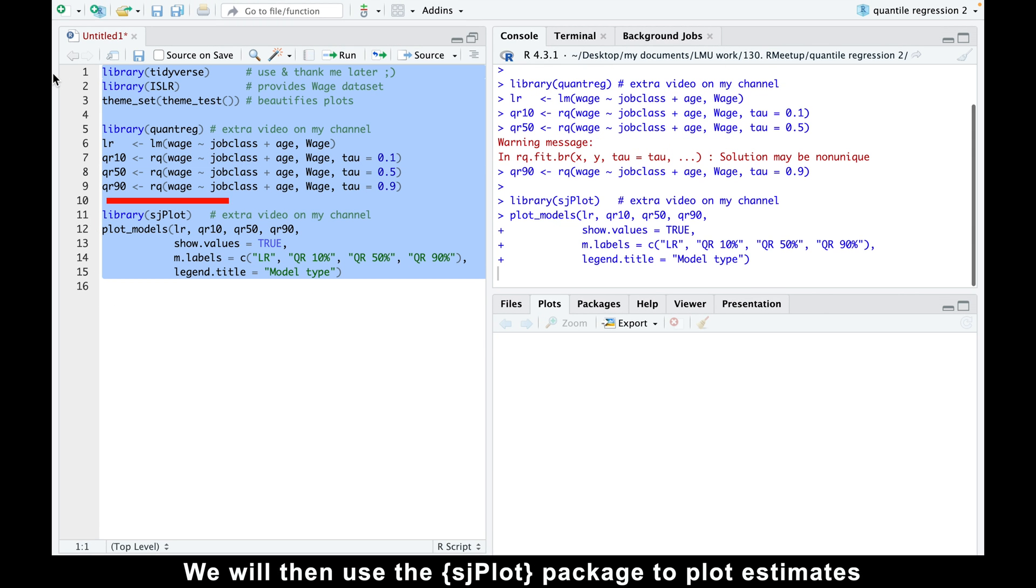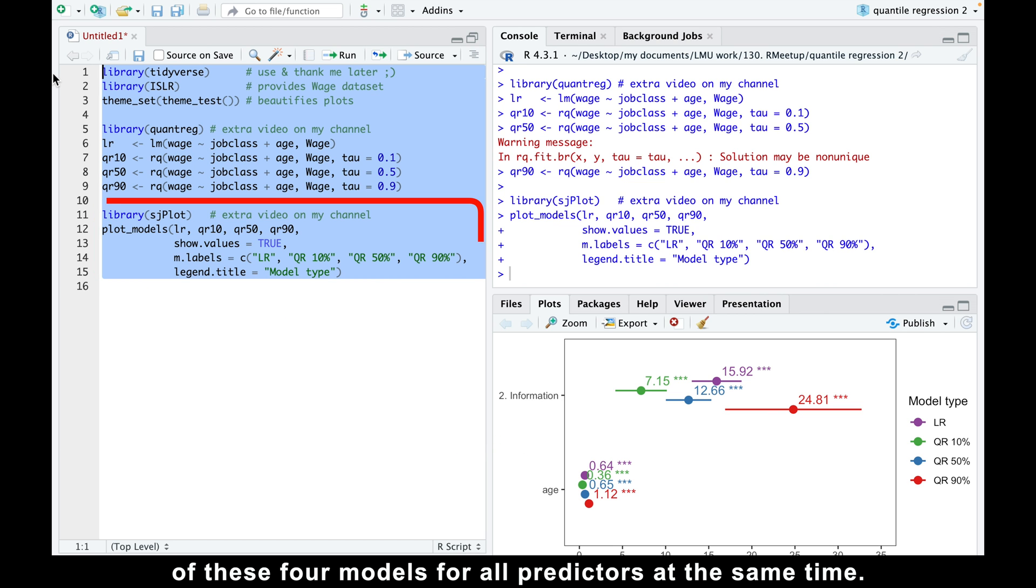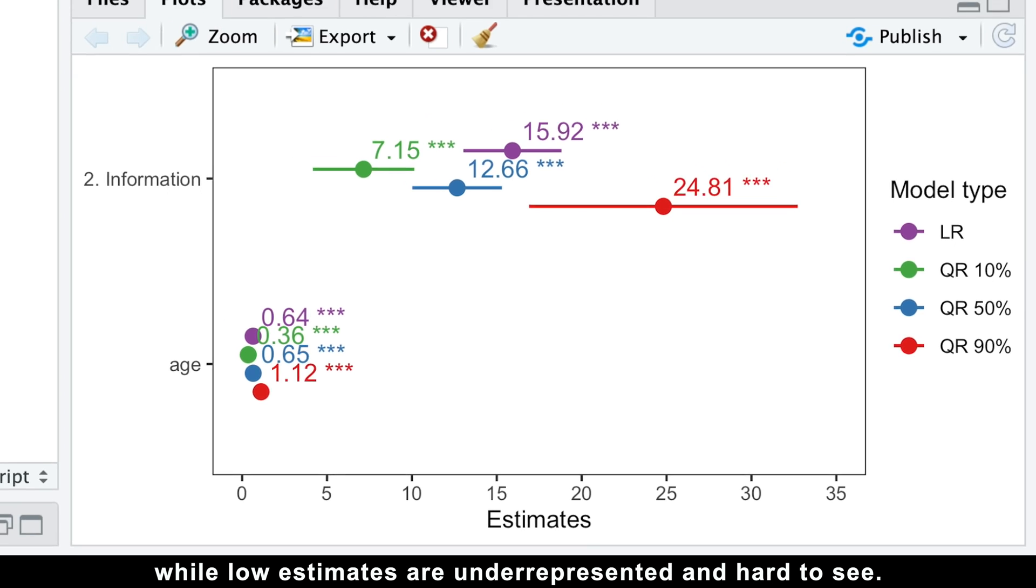We will then use the SJPlot package to plot estimates of these four models for all predictors at the same time. While this plot allows us to compare results among models, different predictors usually have different magnitudes of estimates. High estimates are displayed in a better way, while low estimates are underrepresented and hard to see.